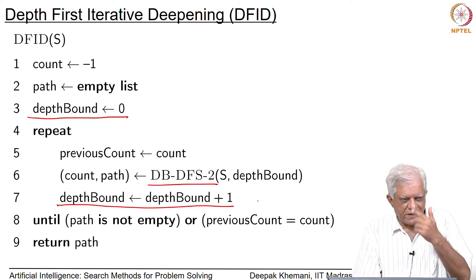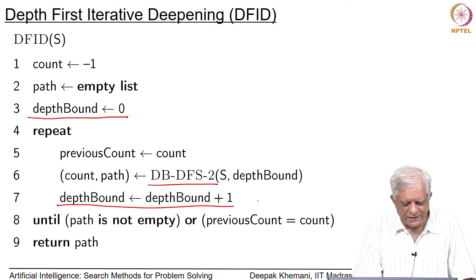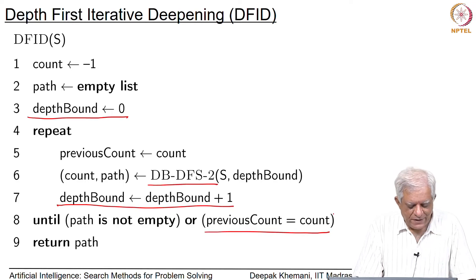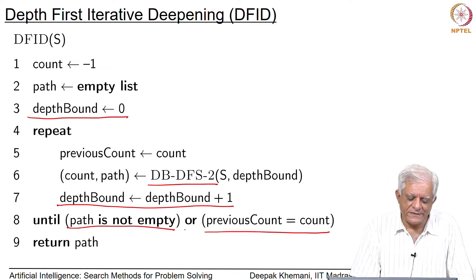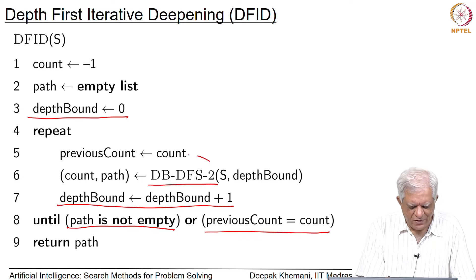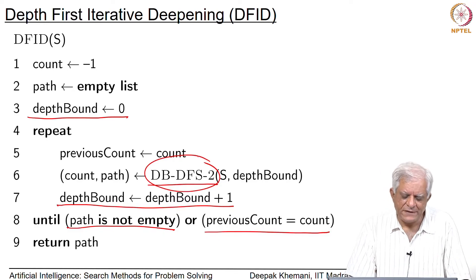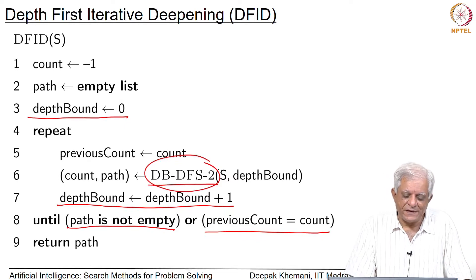Iteratively we do DFS which is longer and longer. We continue doing this till either of two criteria is met. One is that if the count in the previous cycle is the same as in this cycle, which means we are not visiting any new nodes, and therefore we can return with failure. Otherwise, if we have found the path, then we return the path. Because this algorithm is doing a sequence of depth bounded depth first searches, its space complexity will be linear. Since it is going iteratively deeper level by level, it will end up finding the shortest path.